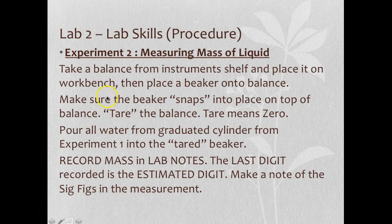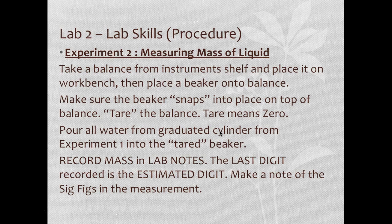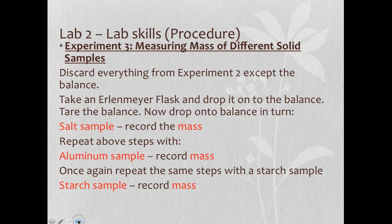The second experiment involves mass measurement. Take a balance from the instrument shelf, place it on your workbench, then take a beaker and snap it into place on top of the balance. Tare the balance — meaning you zero it. Then add the approximately 50 mL of water from the graduated cylinder into the tared beaker and record the mass. Make sure to write down all visible digits, as the last digit is referred to as the estimated digit.